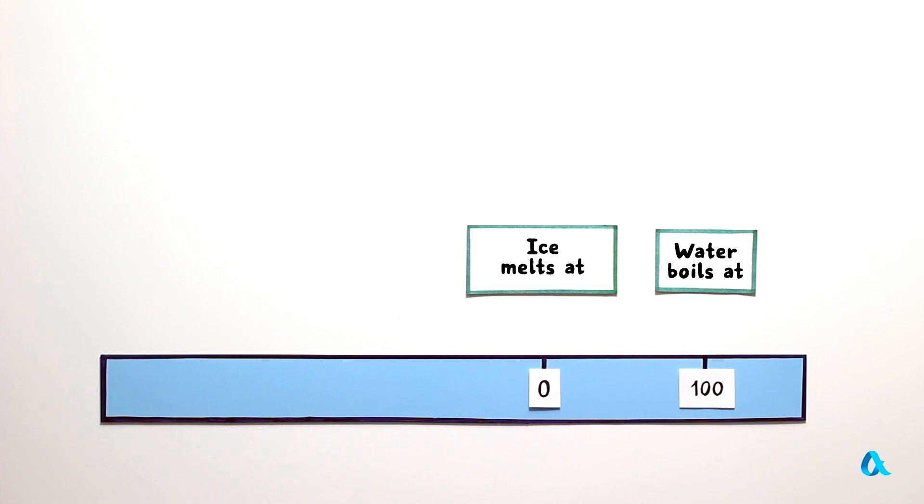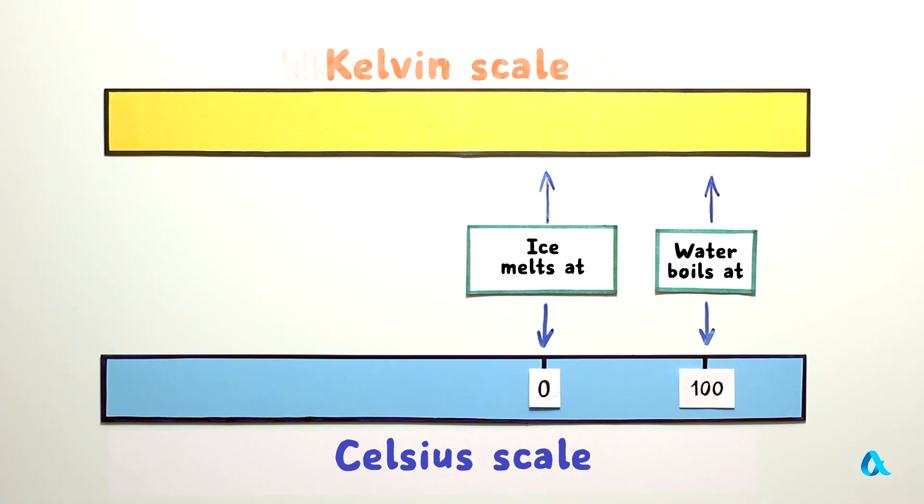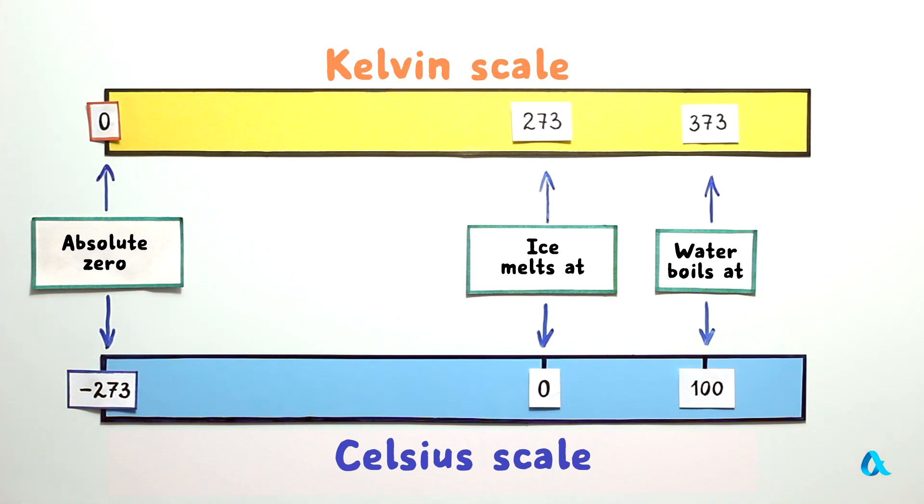The scale by which temperature is reckoned from absolute zero and not from the point of ice melting is called Kelvin scale. To get Kelvin scale temperature value, one has to add 273 degrees to Celsius temperature value.